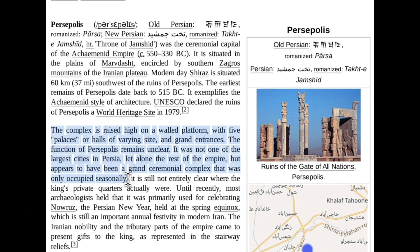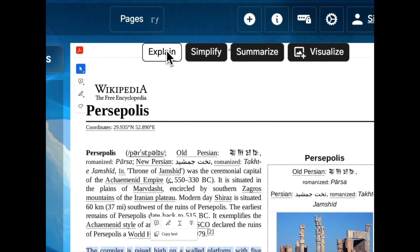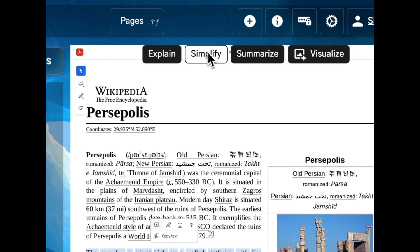By highlighting text, ChatGPT can explain, simplify, and summarize based on learner needs.